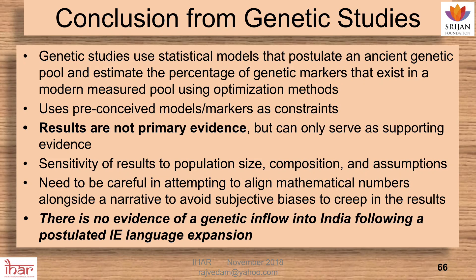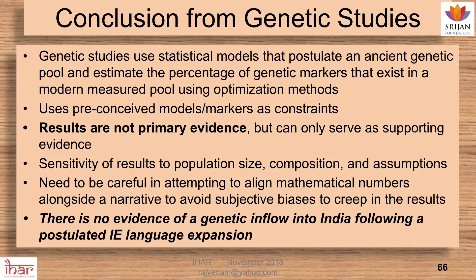So my conclusion has not changed from last year: genetic studies use preconceived models and markers as constraints. Results are not primary evidence — they can only serve as supporting evidence. One will have to see the sensitivity of results to population size, composition, and assumptions. What will happen if I take a few pieces of data out and put some other pieces of data in — how are your results going to change? As an engineer, that is what I do. When my team tells me a model is working beautifully, I will remove some data and do the studies again. Is the conclusion similar? How robust is your conclusion? If removing a few data points converges to an entirely different answer, your model depends strongly on those data points. That is sensitivity — you need to study sensitivity.